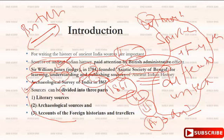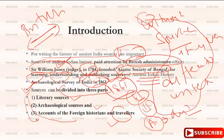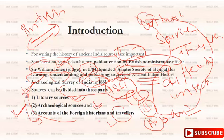The sources are divided into three parts: first, literary sources; second, archaeological sources; third, foreign accounts and travelers. All three sources are very important for reconstructing the history. Any student who wants to write the history of ancient India must go through literary sources, archaeological sources, and foreign accounts.